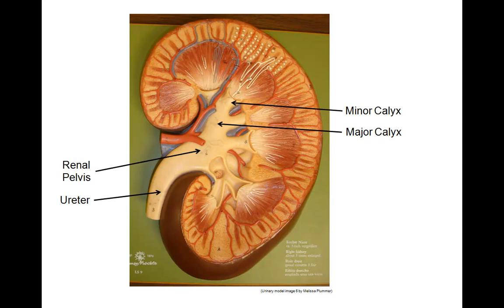Urine that is produced in the kidney drains out the renal papillae into a funnel shaped structure, a minor calyx. Each papilla is surrounded by a minor calyx. Several minor calyces will merge and form a major calyx. And major calyces merge into a central drainage point, the renal pelvis. Urine drains from the renal pelvis into the ureter.